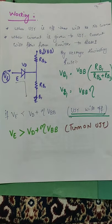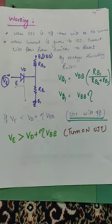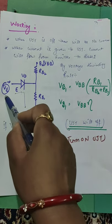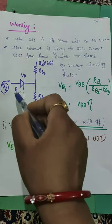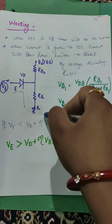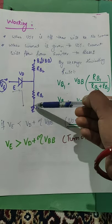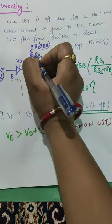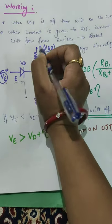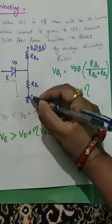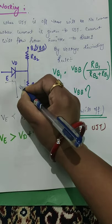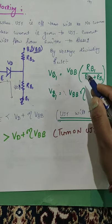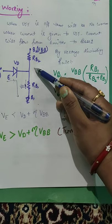Working: When UJT is off, there will be no current. When voltage is given to the emitter, current will flow from emitter to Base 1. VBB is given and by the voltage dividing rule, VB1 equals VBB multiplied by RB1 divided by (RB1 plus RB2).